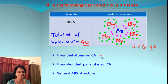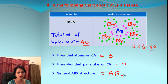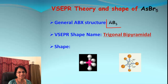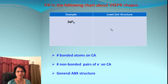For AsBr₅: five bromine atoms are bonded to the central arsenic atom. There are no unshared electrons on the central atom, so X equals zero. ABX formula: A equals one, B equals five, X equals zero (not written). The molecule arsenic pentabromide has ABX structure AB5. Using the table, the predicted VSEPR shape is trigonal bipyramidal.